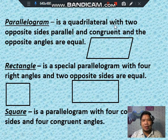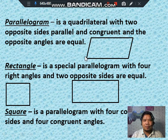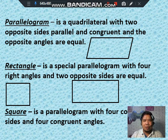A parallelogram is a quadrilateral with two opposite sides parallel and congruent, and the opposite angles are equal. Here is the illustration for parallelogram: two opposite sides are equal, and the congruent opposite angles are also equal.